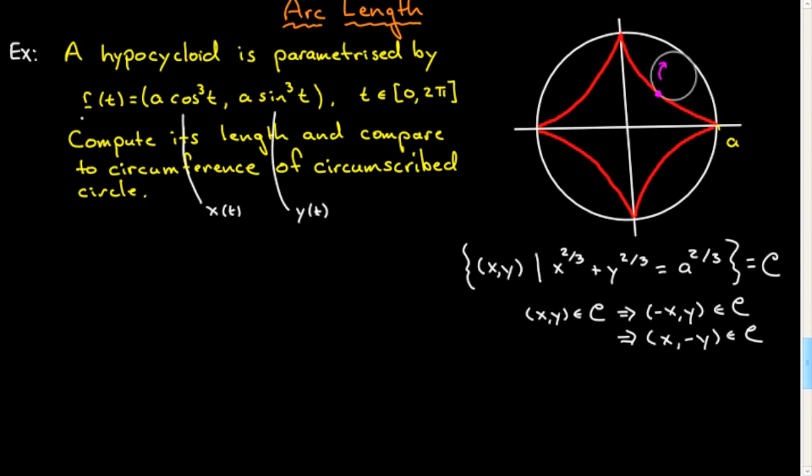Let's go ahead and compute the derivative of our parameterization. We're surely going to need that. So I'm going to get C'(t) = (-3a cos²t sin t, 3a sin²t cos t).